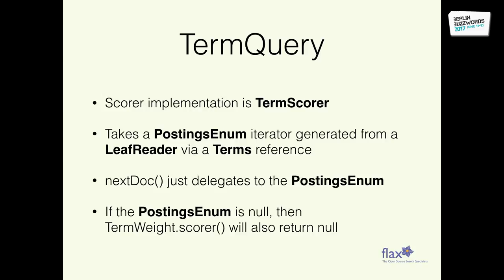The simplest query is term query. This just takes the postings enumeration from your leaf reader, which is just an iterator over the postings list of a particular term. The DocID set iterator basically just delegates directly to the postings enumeration, which will iterate over your postings list. If the postings enumeration is null, that means there are no matching terms for this token in that segment, so the whole thing returns null. Very simple, very straightforward, very fast - it's just literally reading bytes off disk.